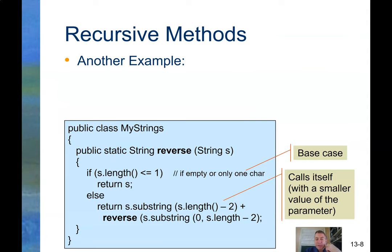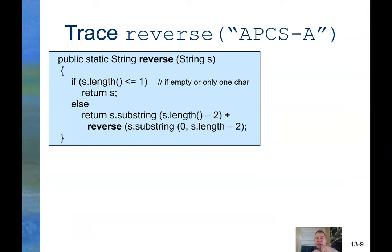Reverse a string. Let's reverse the string A-P-C-S-A. Is the length less than or equal to 1? No. The length is 6. So return substring s dot length minus 2. If you remember your substring, your string method, substring starts... If there's only one parameter, it starts with that one. It goes to the end. Length minus 1 is the last character.